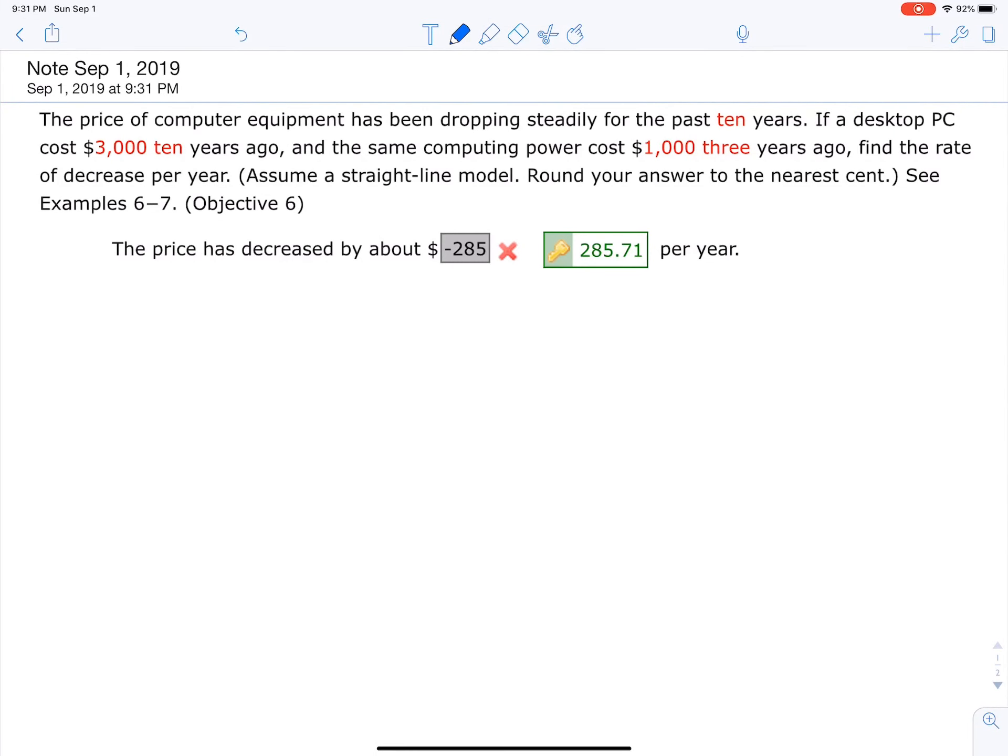All right, so the price of computer equipment has been dropping steadily for the past 10 years. If a desktop PC cost $3,000 ten years ago and the same computing power cost $1,000 three years ago, find the rate of decrease per year.